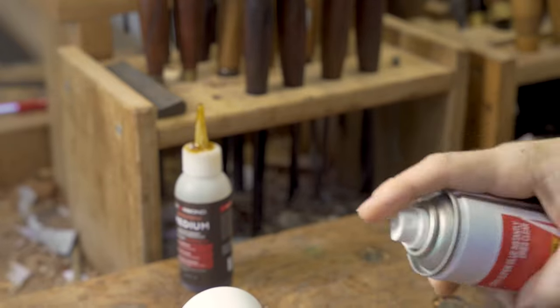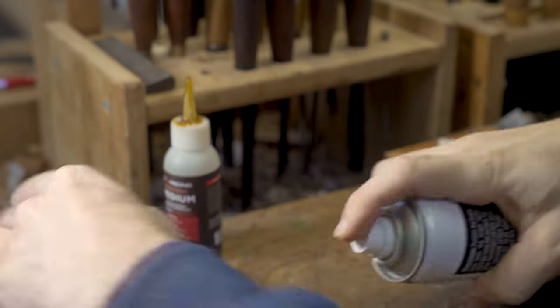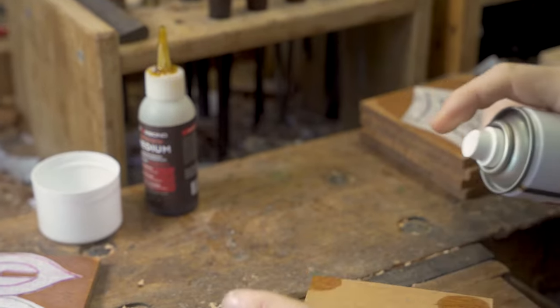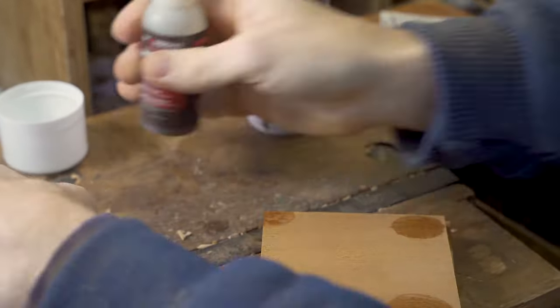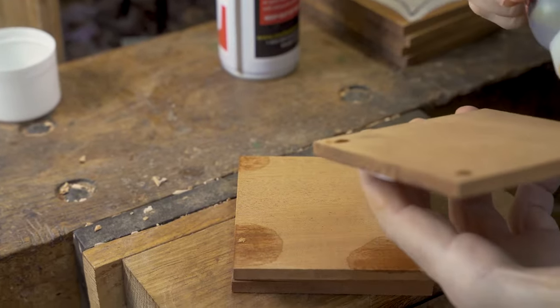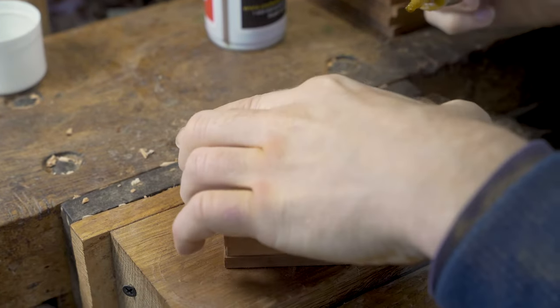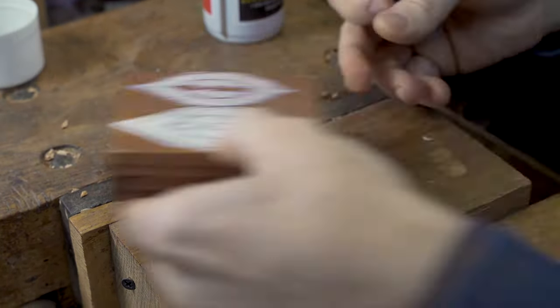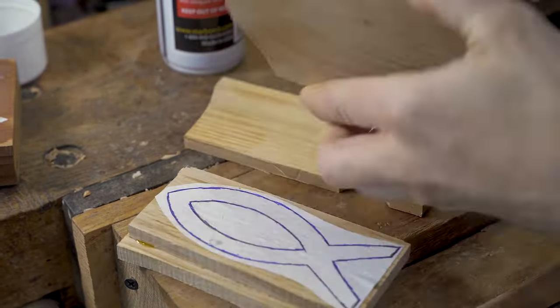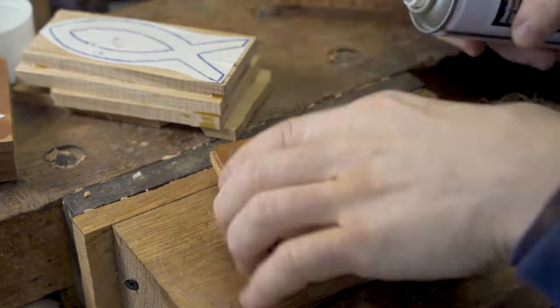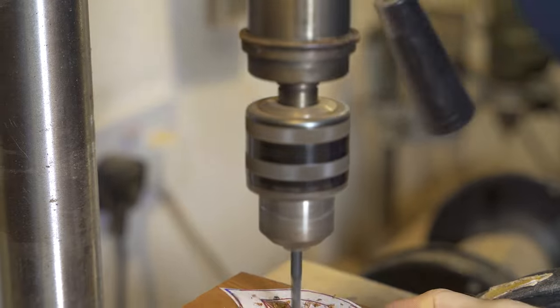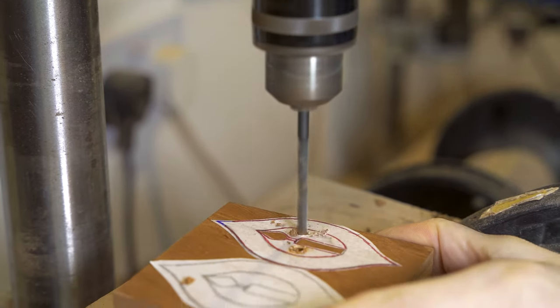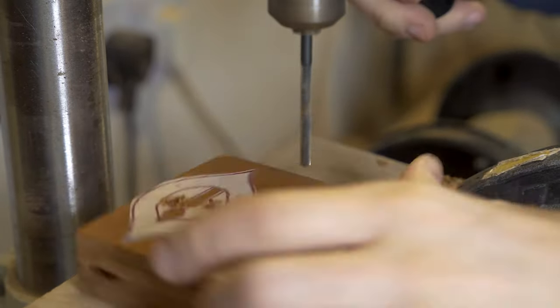Once we have finished marking the designs onto the wood we use our Starbond superglue and accelerant to stack different layers together. In all we are going to have four layers so we're able to cut out two 3D Christmas tree decorations at the same time. The reason for this is we need two layers for each decoration.